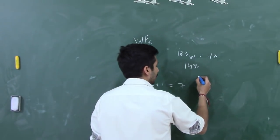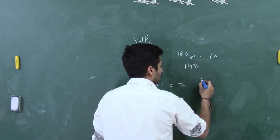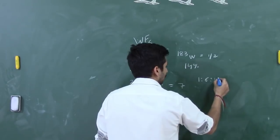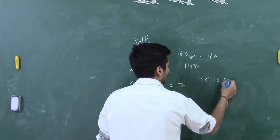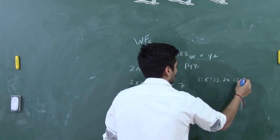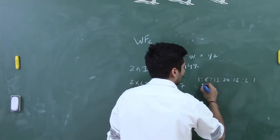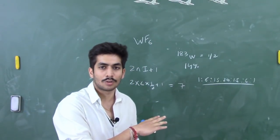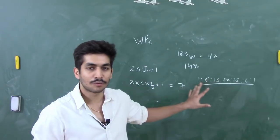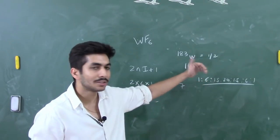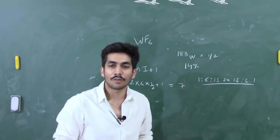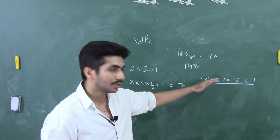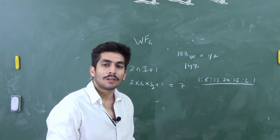The ratio of lines in the septet follows Pascal's triangle rule — something like 1:6:15:20:15:6:1 — because the spin is 1/2. If spin were greater than 1/2, we would follow the non-Pascalian triangle rule. That is the ratio for the tungsten NMR. But what if we take the 19F NMR? This is where the concept of satellite peaks comes in.